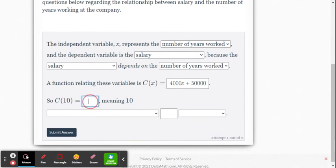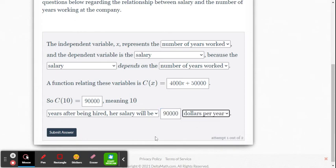So C of 10, that means you worked for 10 years. 10 times $4,000 is $40,000. On top of your $50,000, it means you're up to $90,000 per year, meaning 10 years after being hired, her salary will be $90,000 per year.